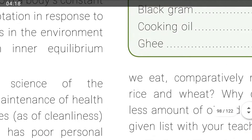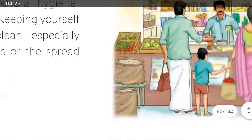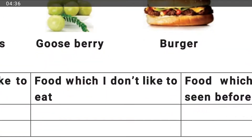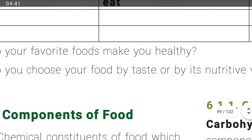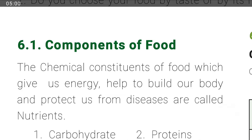Next, how do we get good health? We eat a balanced diet. The balanced diet contains carbohydrates, protein, fat, vitamins, minerals, and water. The components of food — the chemical constituents of food — give us energy. They build our body and protect us from diseases. These are called nutrients. Nutrients are the benefits of food which give us energy, build up our body, and protect us from diseases.